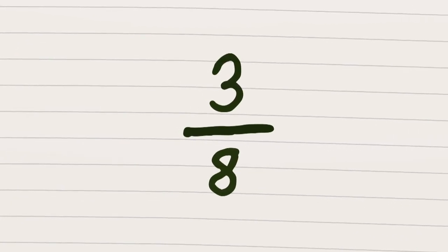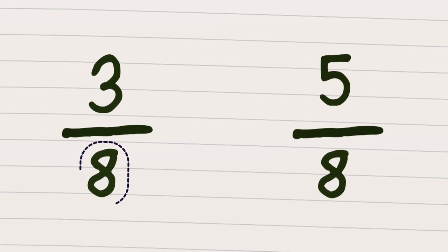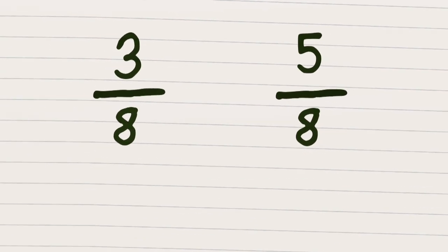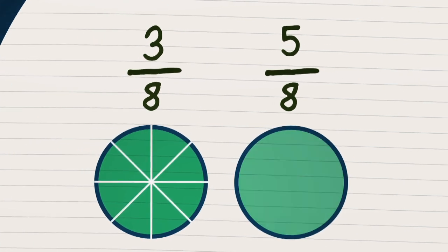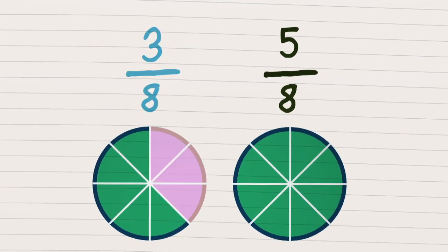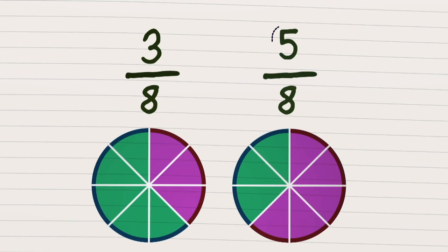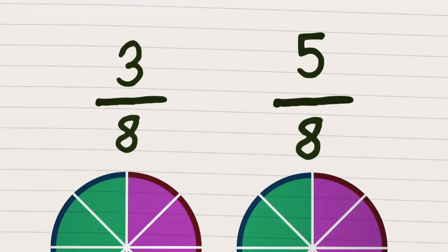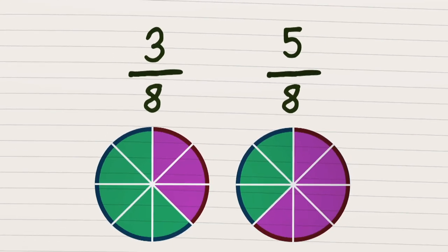Take three over eight and also five over eight. You can see the denominators in both are the same. In this situation, the denominator shows us the whole is being divided up into eight parts. There are three of the eight parts in three eighths, and five of the eight parts in five eighths. Because five is more than three, over the same denominator, the fraction with the biggest upper number is the greater.